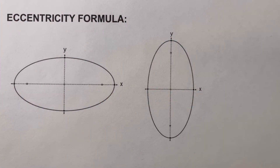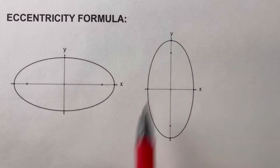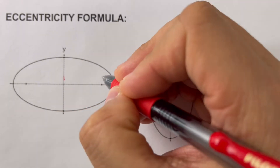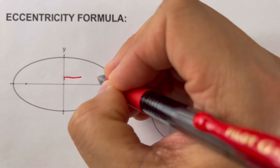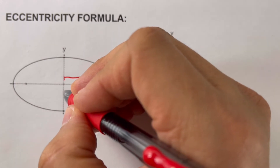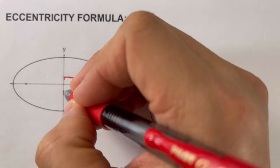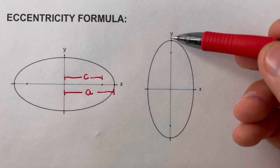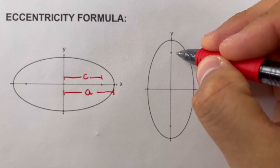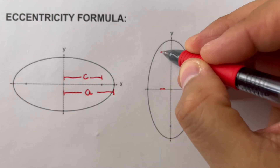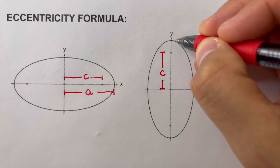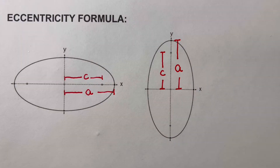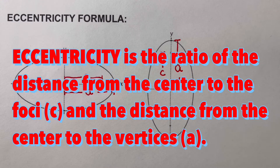We will see the two cases of an ellipse: the horizontal and the vertical ellipse. The distance from the center to the focus is represented as letter c, and the distance from the center to the vertex is represented as letter a. For a vertical ellipse, it's the same — the distance from the focus to the center is c, and the distance from the vertex to the center is a.